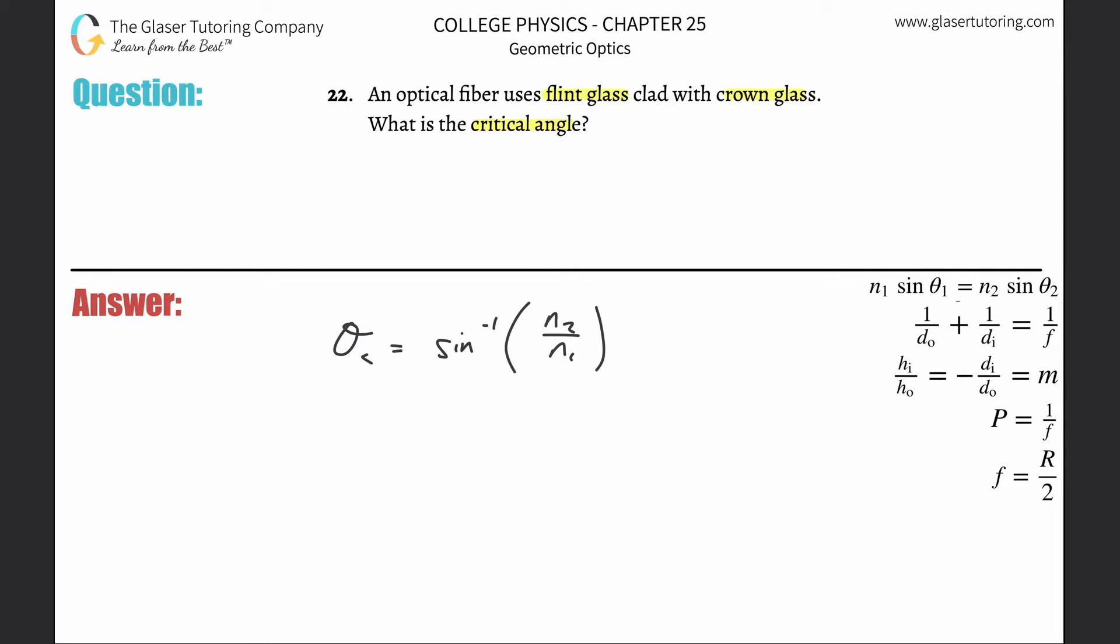Where n2 here must be less than n1. The index of refraction of the second medium must be less than the index of refraction for the first medium. Now all we got to do is look this up.